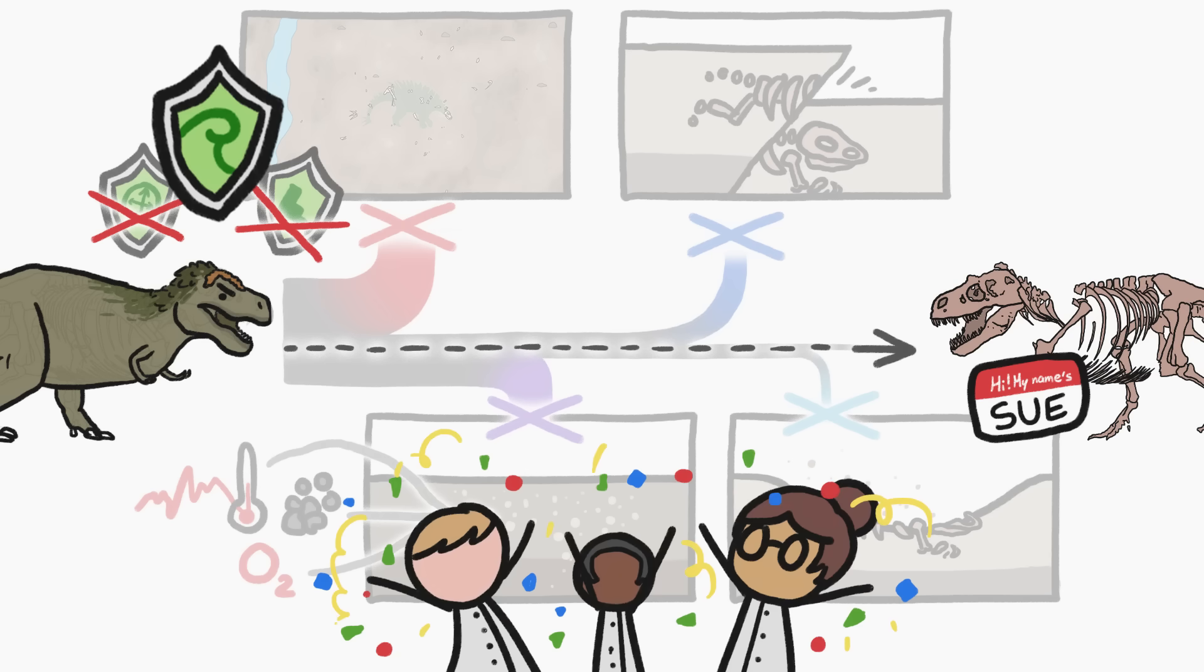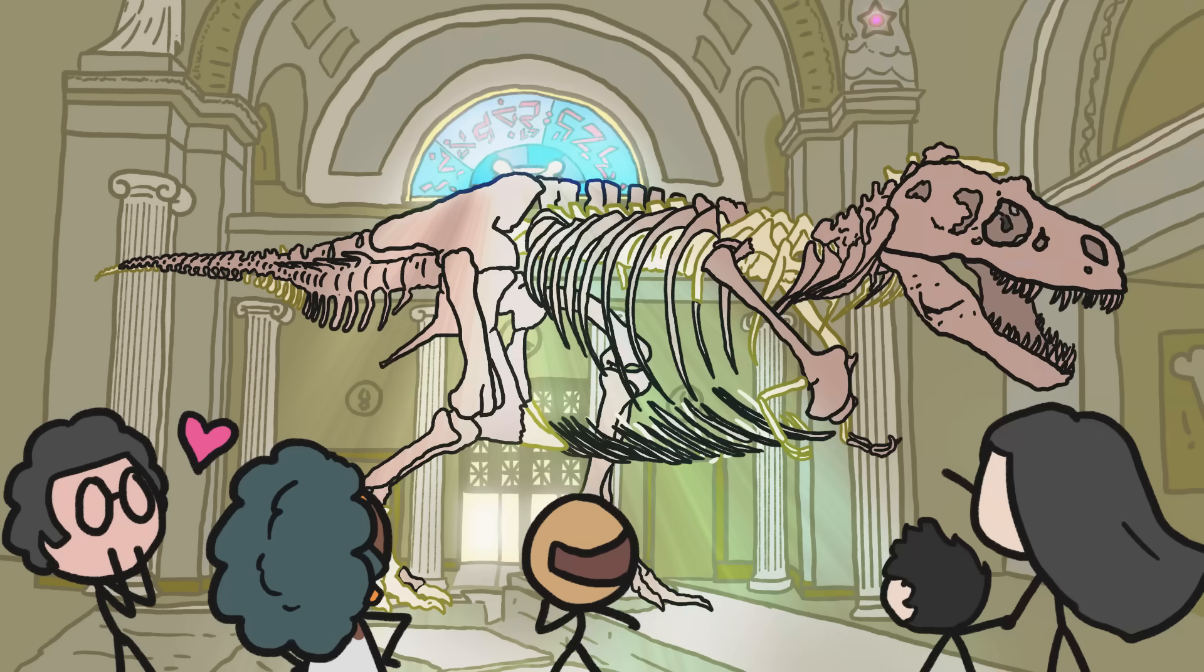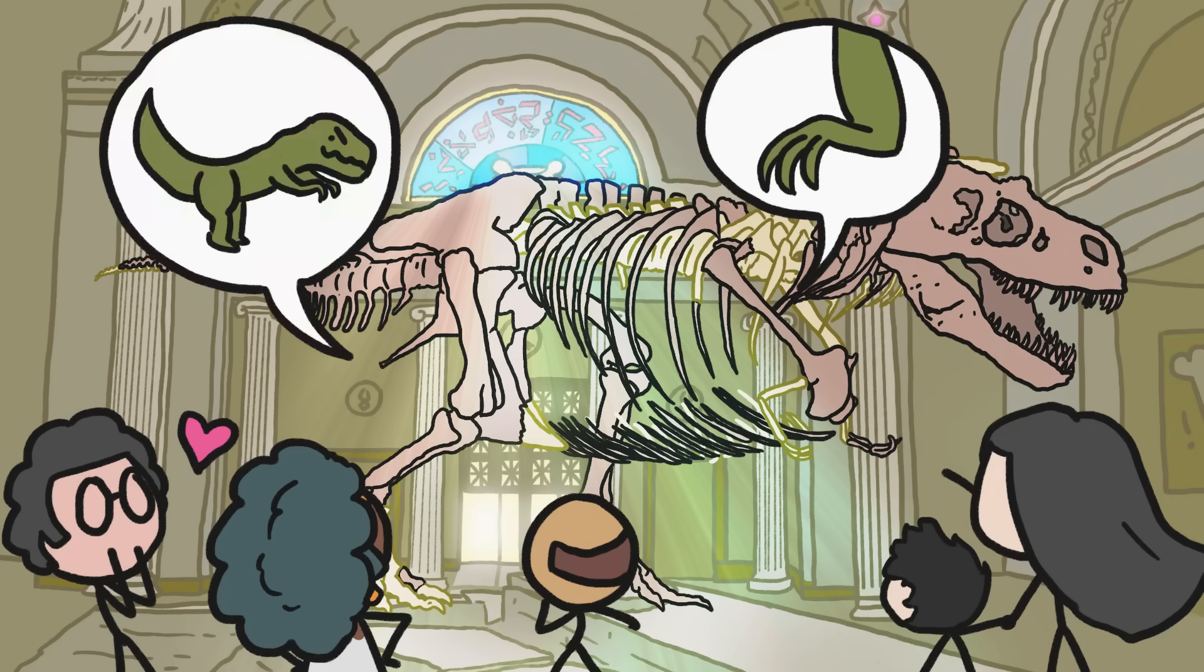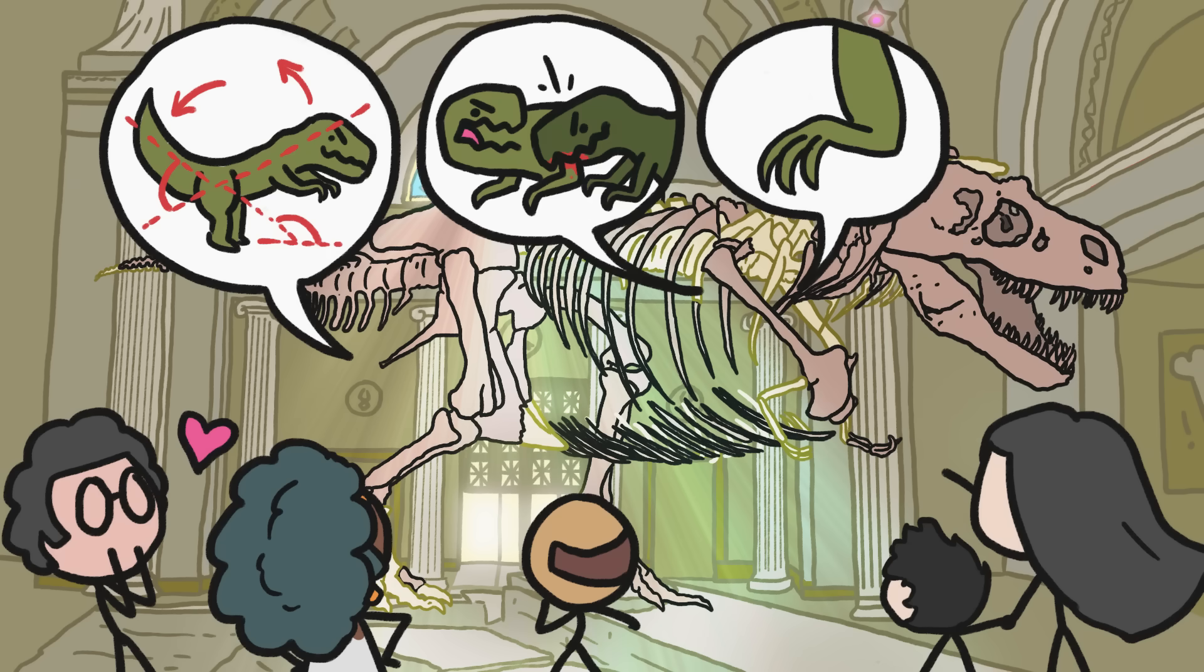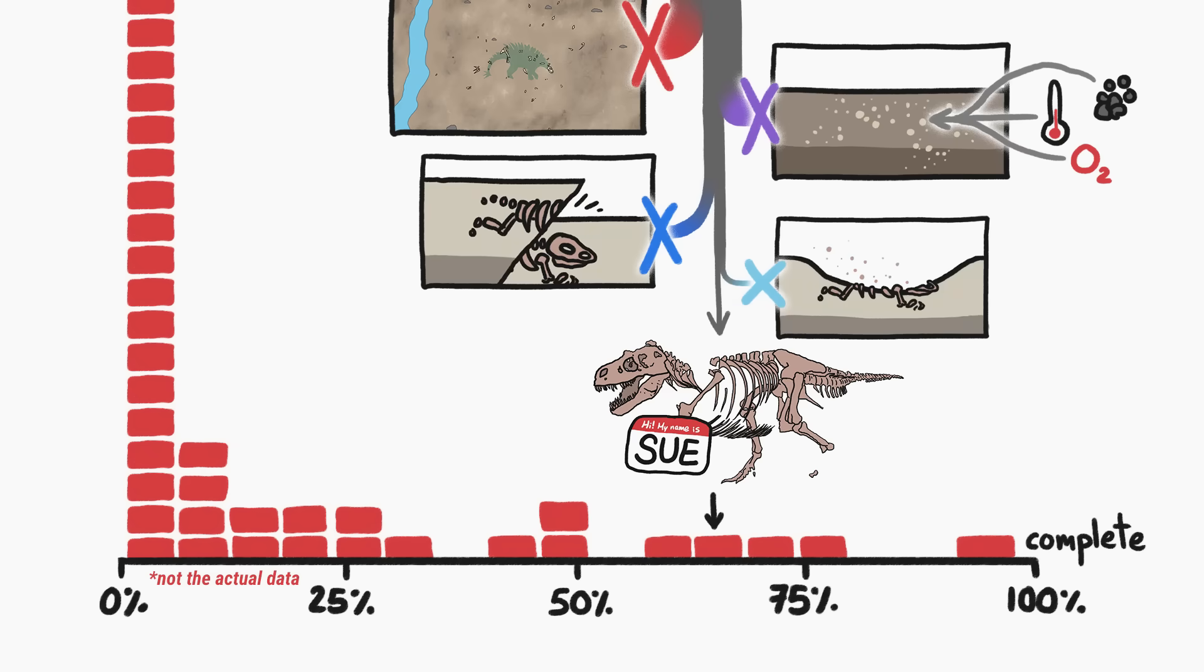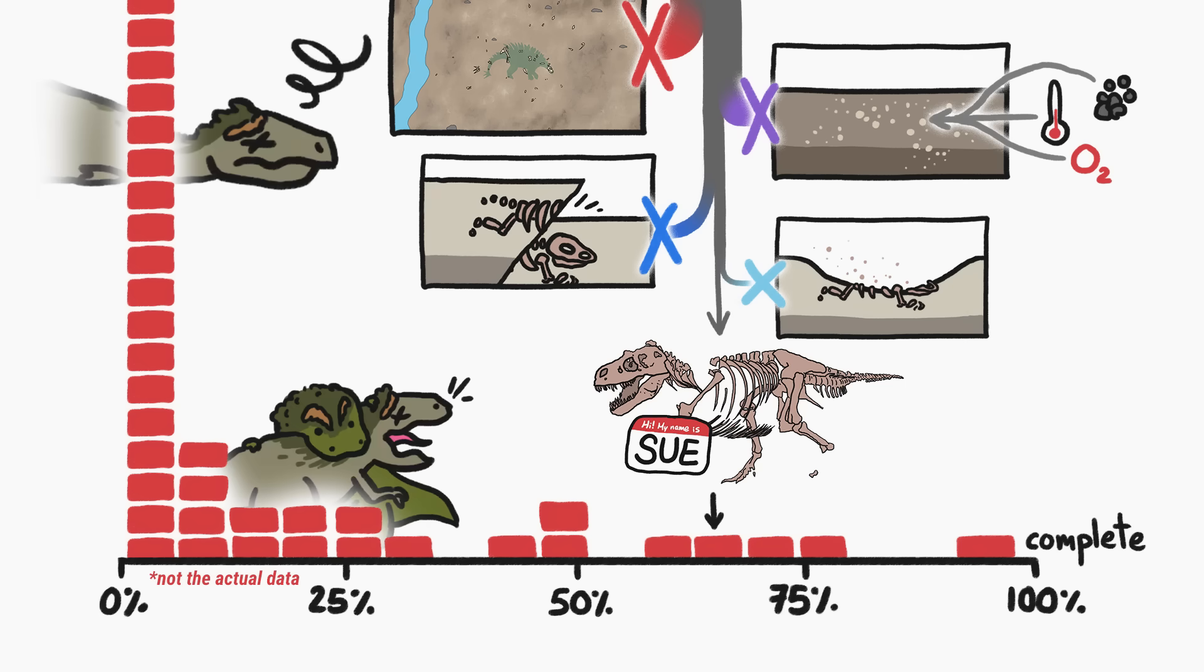Which is lucky for us, because not only is the fossil amazing to look at, its completeness has taught us lots about the anatomy, biomechanics, and even daily life of a T-Rex. But then again, the fact that a series of very unusual events was required to preserve that skeleton so well means that Sue isn't particularly representative of how most dinos died, or the conditions that normally scattered and weathered their bodies.